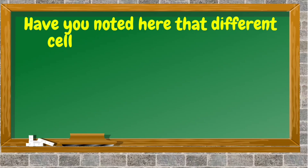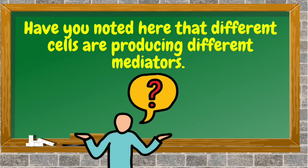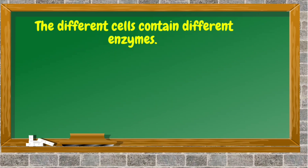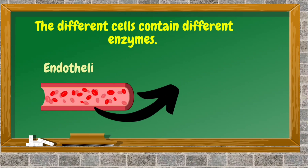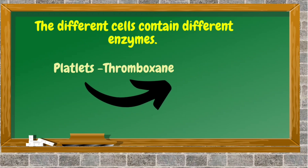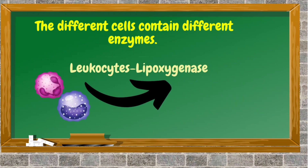Have you noted that different cells are producing different mediators? Why is it so? The answer is that different cells contain different enzymes. For example, endothelium contains the enzyme prostacyclin synthase, so it produces prostaglandins. Platelets contain the enzyme thromboxane synthase, and hence produce thromboxane A2. Leukocytes contain the enzyme lipoxygenase, and so leukotrienes are produced in them.